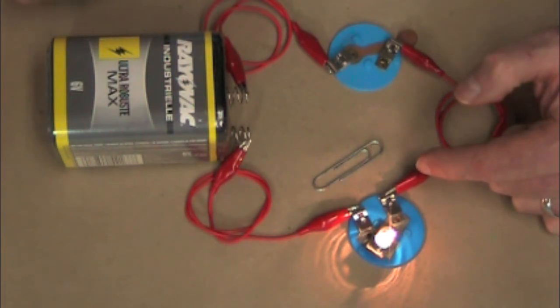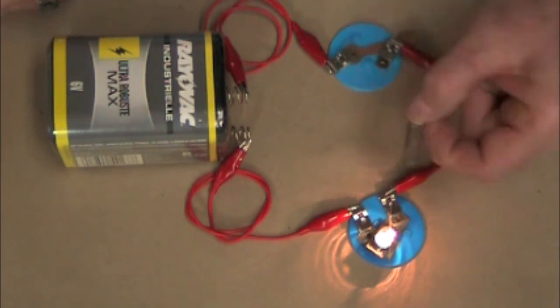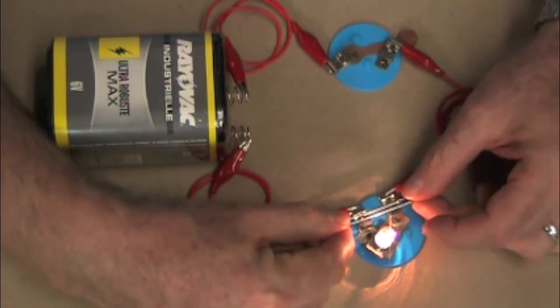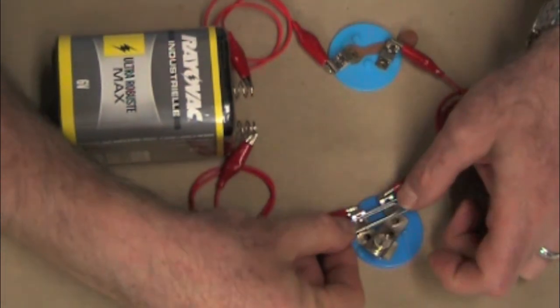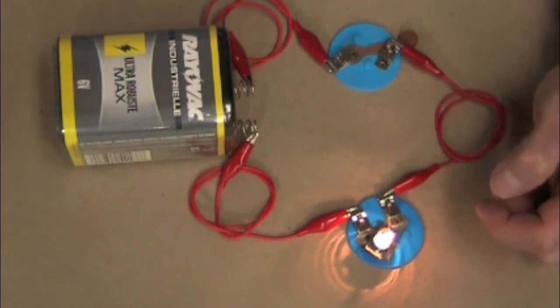So the electricity, it's lazy. It will find the easiest way to go. So if I give it an easier way to go, it's harder for it to go through the light bulb than through the conductor. And if I go like this, then the electricity is just going to go right through the paper clip and bypass the light bulb. Now that causes a problem.